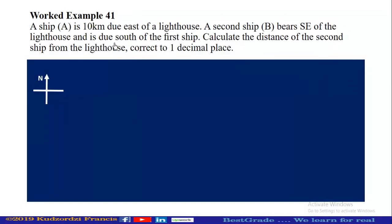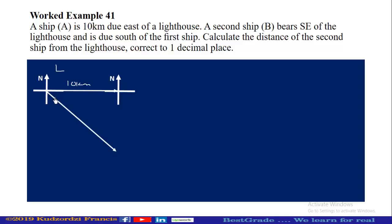A ship A is 10 kilometers due east of a lighthouse. So let this be the lighthouse — this is east, 10 kilometers due east. We are now at this position. Then a second ship bears southeast of the lighthouse, so you must move on the southeast line to get to the second ship. Note that southeast bears 45 degrees from east.